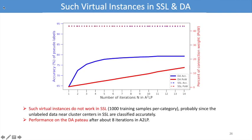Here are also some interesting findings. Firstly, such virtual instances do not work in semi-supervised learning, probably since unlabeled data near the cluster centers are classified quite accurately in semi-supervised learning. Secondly, the performance on domain adaptation tasks plateau after about 8 iterations.